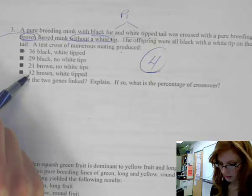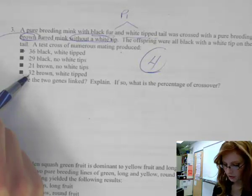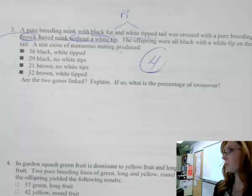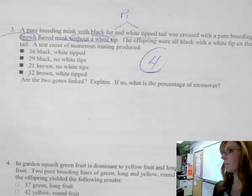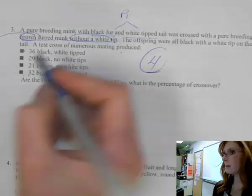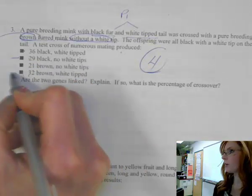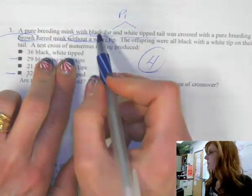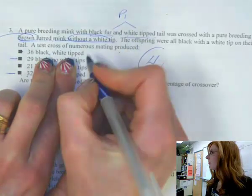Can we tell from 36 to 29 to 21 to 32 if it's a 1 to 1 to 1 to 1 or a lopsided? No. Okay. So always best to calculate percentage of recombination. Now, how do I find the recombinants? The second and the fourth.